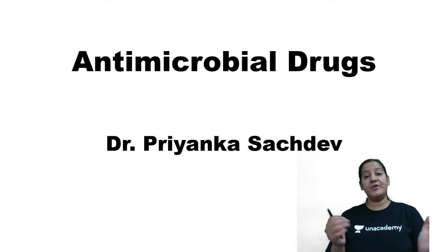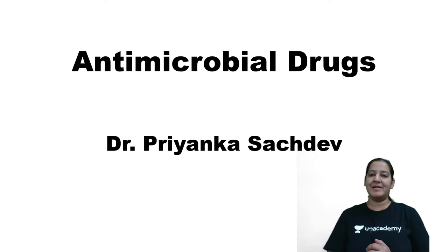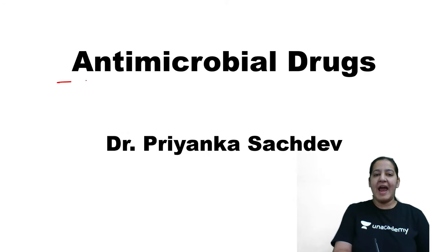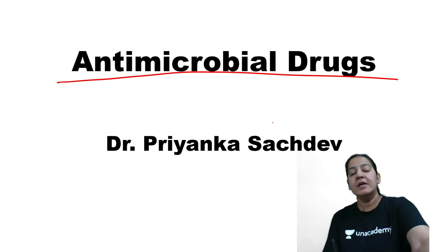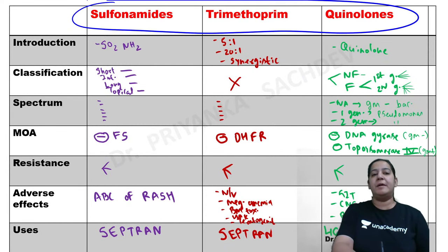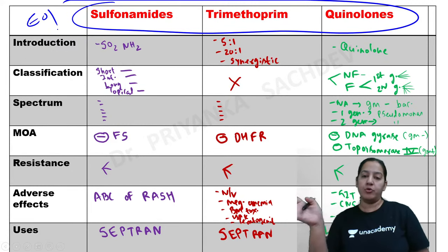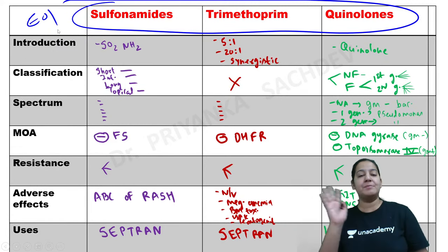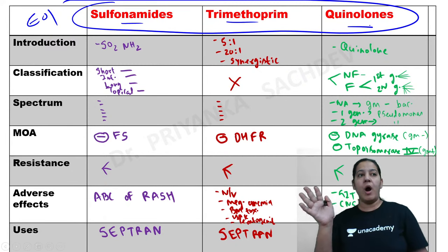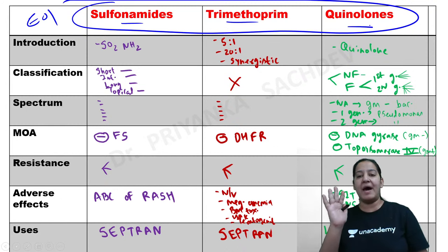Welcome to today's session. I am Dr. Priyanka Sajdev, continuing my series on pharmacology. Today is episode 4 of antimicrobial drugs. In episode 1, we covered drugs that inhibit nucleic acid synthesis — sulfonamides, trimethoprim, and quinolones — with comparative master tables. Those tables allow you to revise entire chapters in just 5 minutes and crack any MCQ based on these chapters.